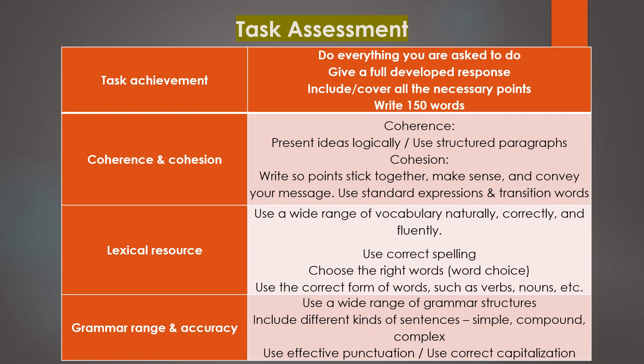Now let's take a look at the task assessments. 25% is task achievement, in which you need to answer everything you're asked to do in the question. The other 25% is coherence and cohesion — use structured paragraphs and make standard expressions. The other 25% is lexical resource — use a wide range of vocabulary. And the last 25% is grammar range and accuracy, which includes different kinds of sentences ranging from simple, compound, and complex.